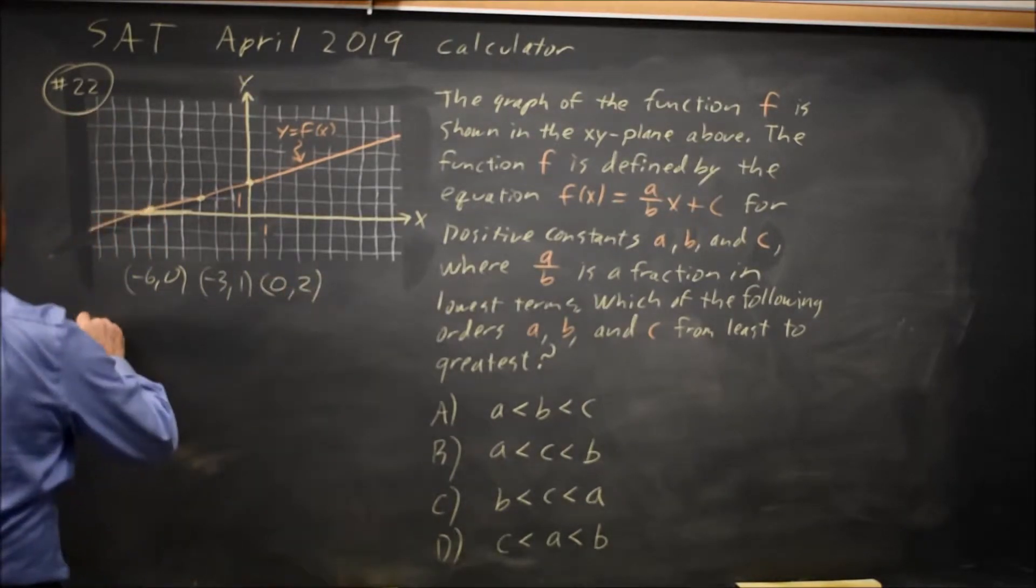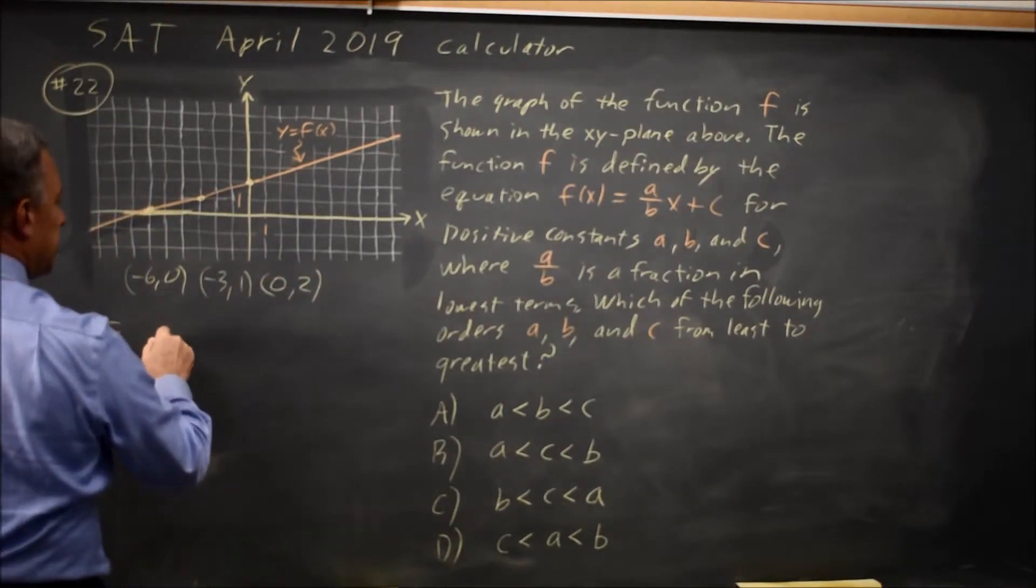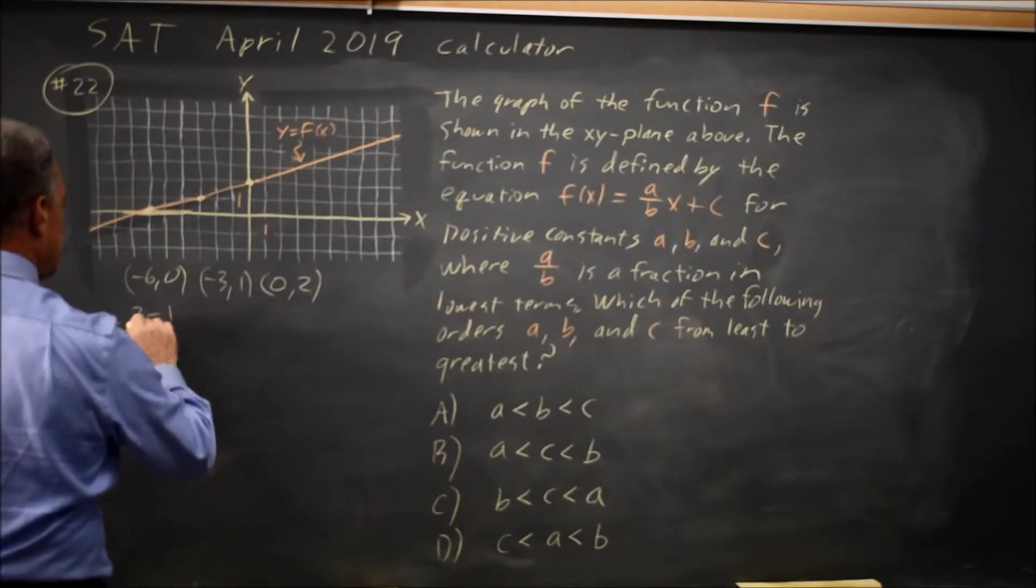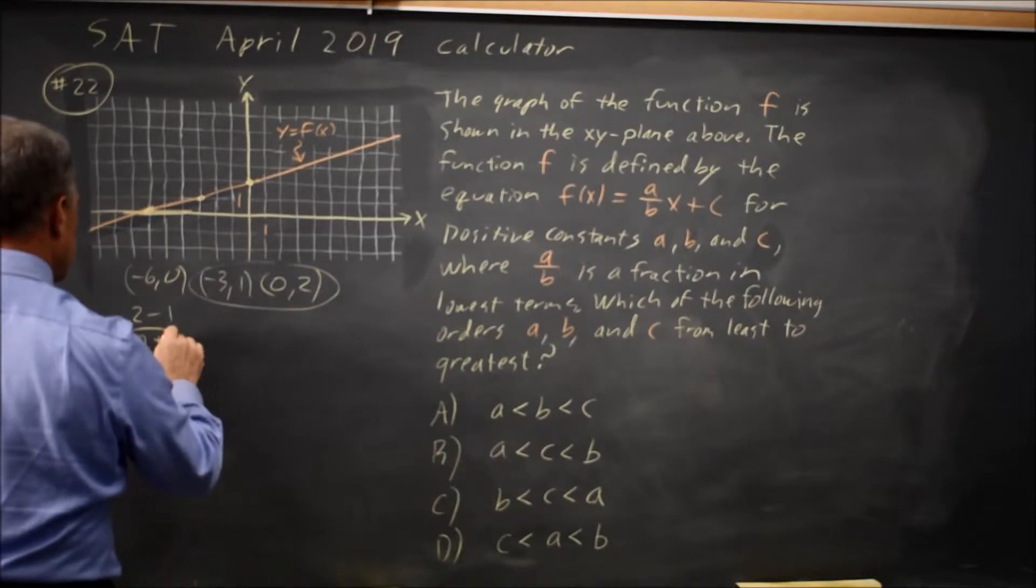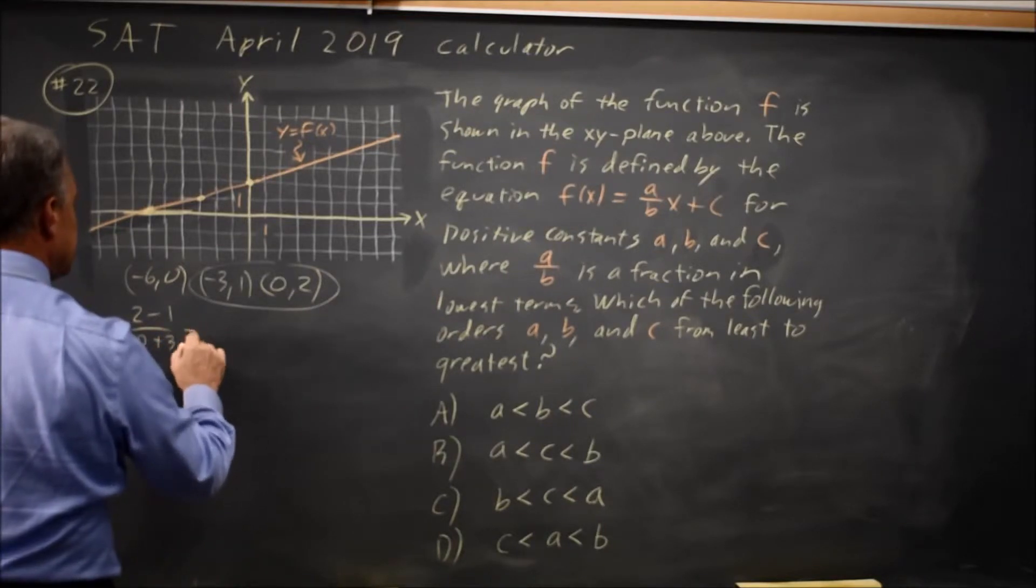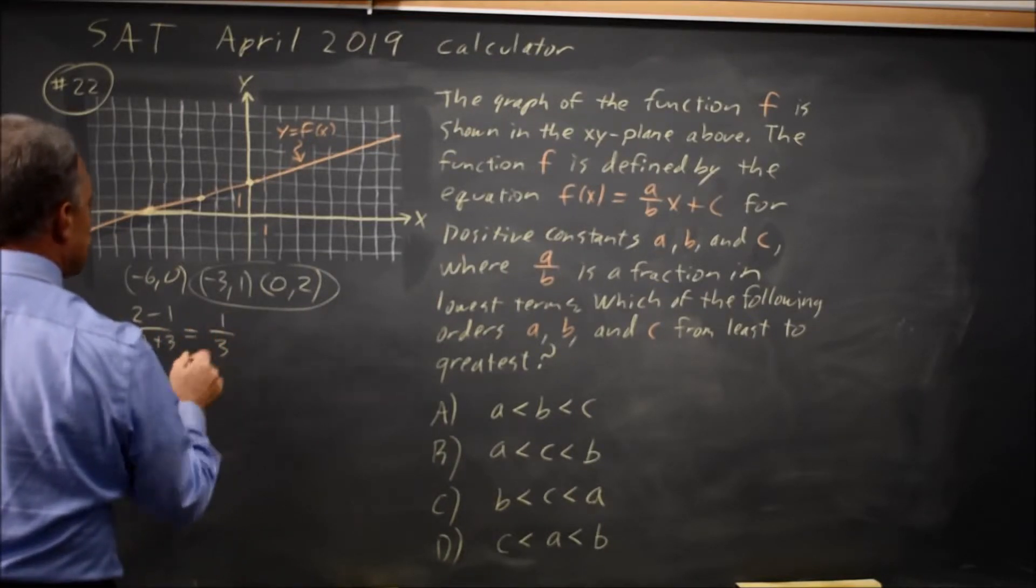So our slope is y2 minus y1 over x2 minus x1, which equals 2 minus 1 over 0 plus 3, which is 1 over 3.